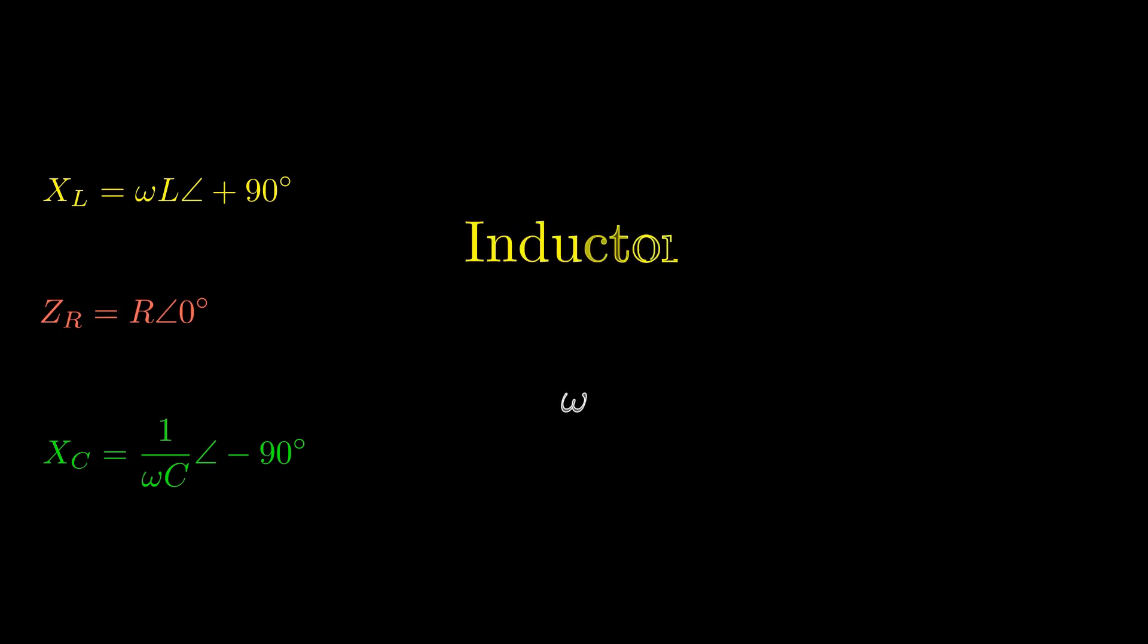These expressions can tell us about how these components function given different frequencies. For an inductor, a large omega would act like an open circuit, while a very small omega would act like a short circuit. A resistor is not dependent on omega, therefore there is no change.